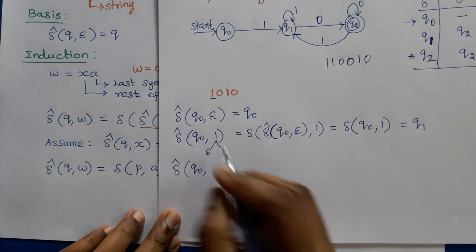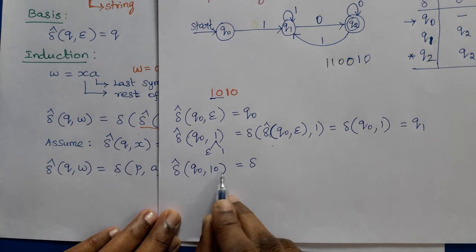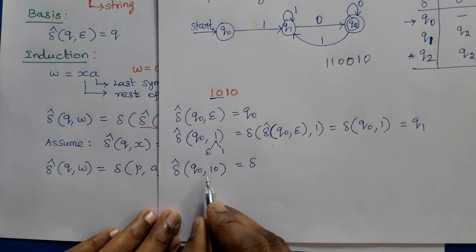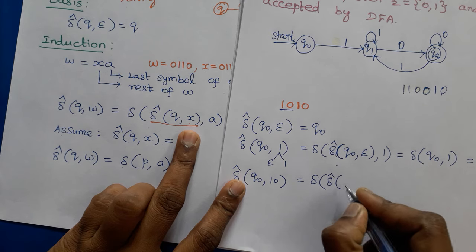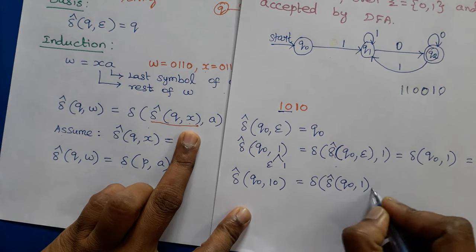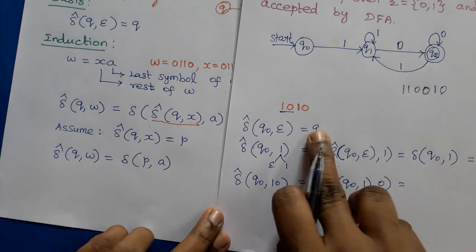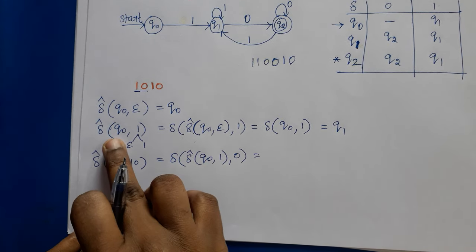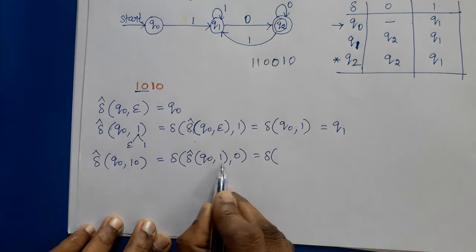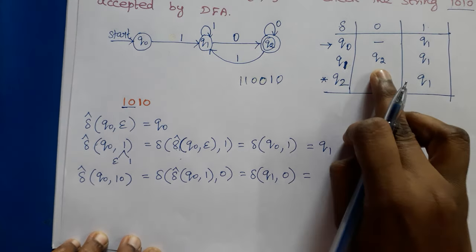Next, find delta-cap(Q0, 10). W = 10, so A = 0 and X = 1. We get delta-cap(Q0, 10) = delta(delta-cap(Q0, 1), 0) = delta(Q1, 0) = Q2.